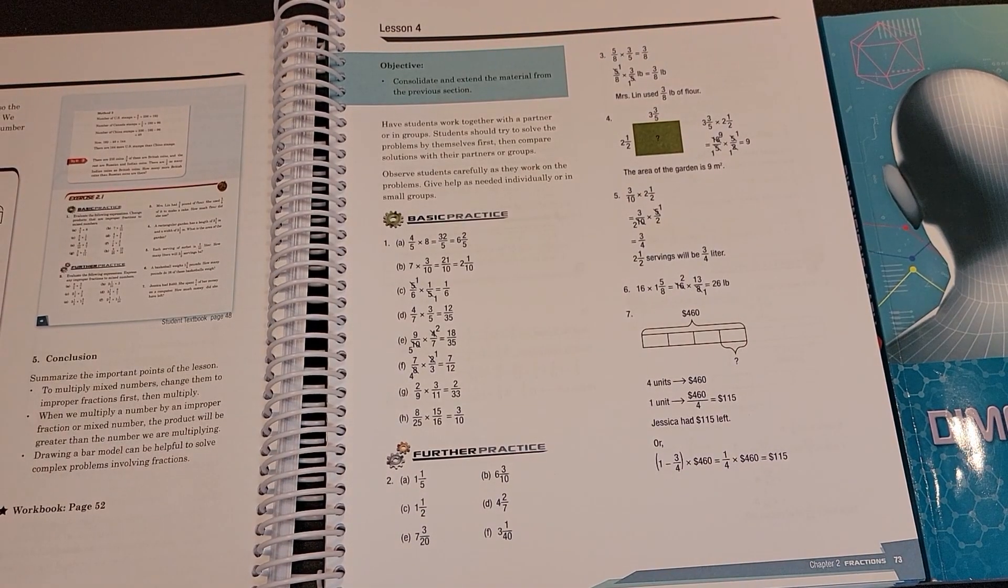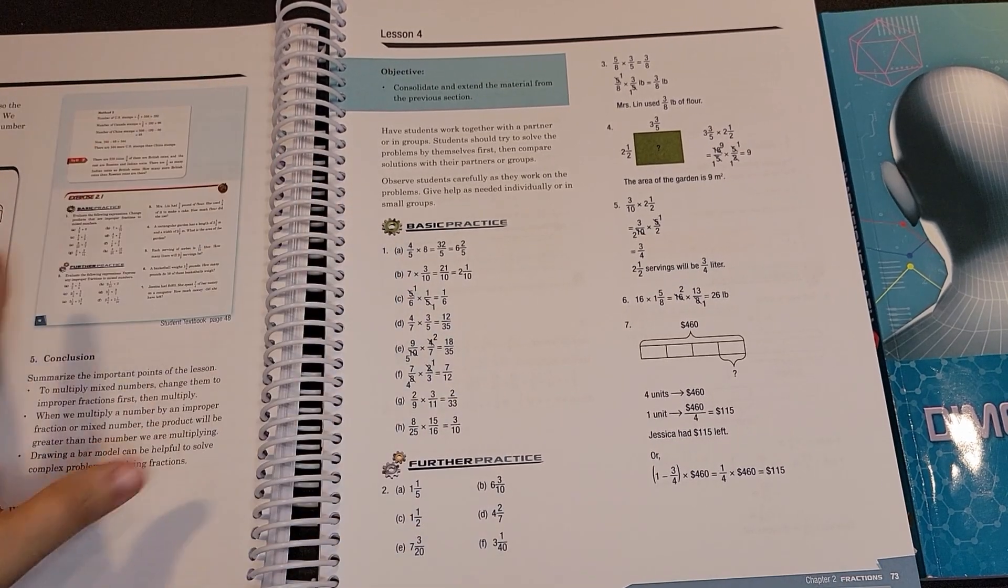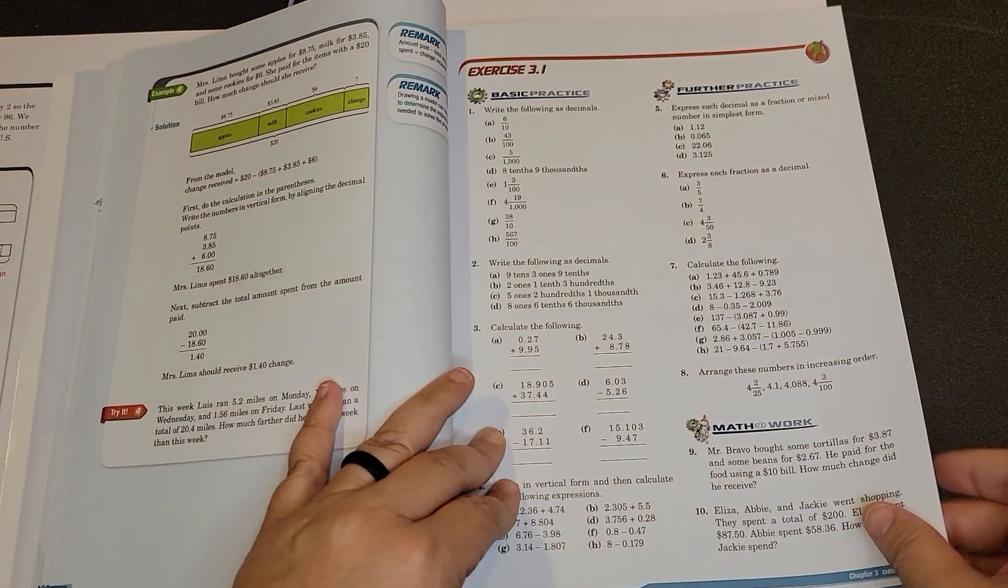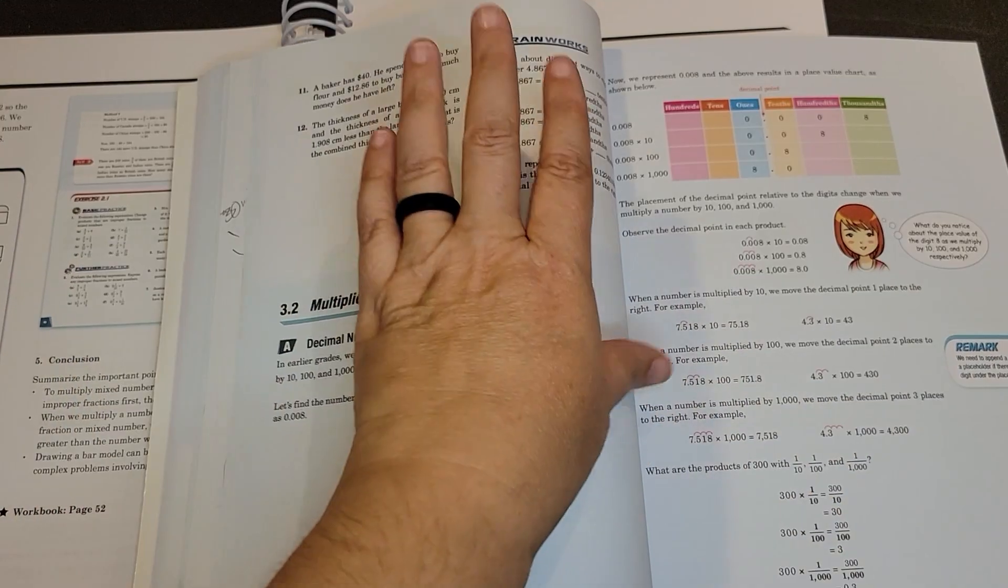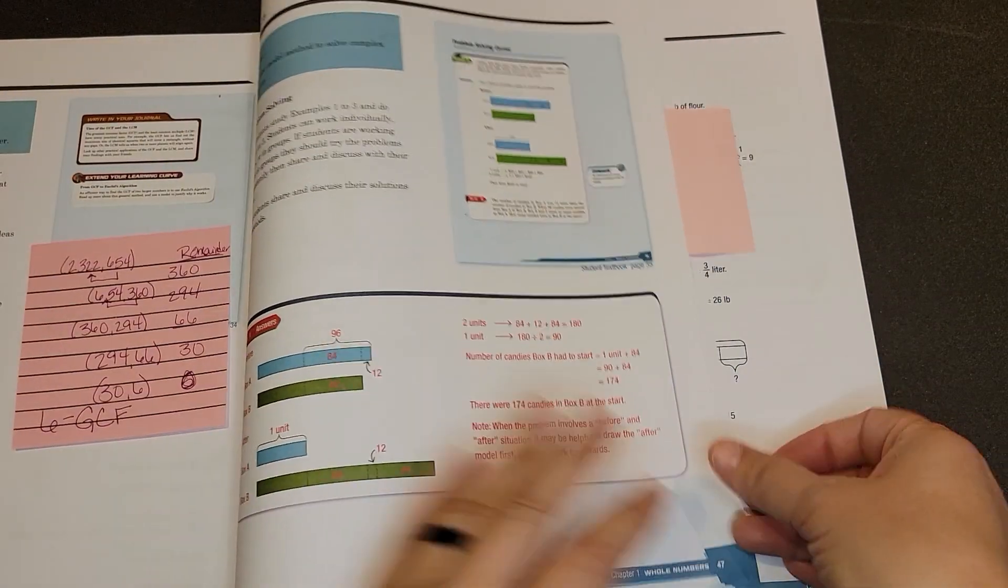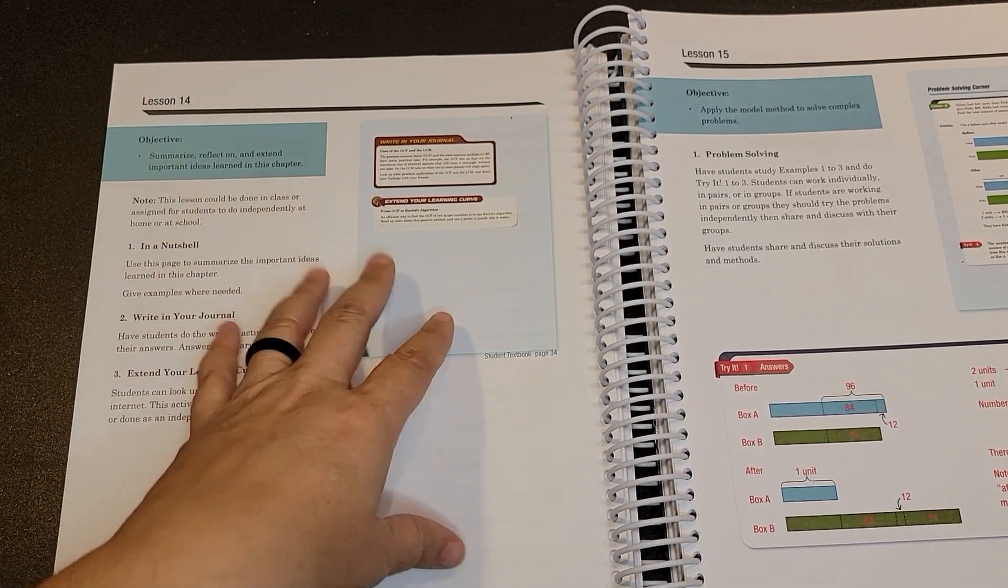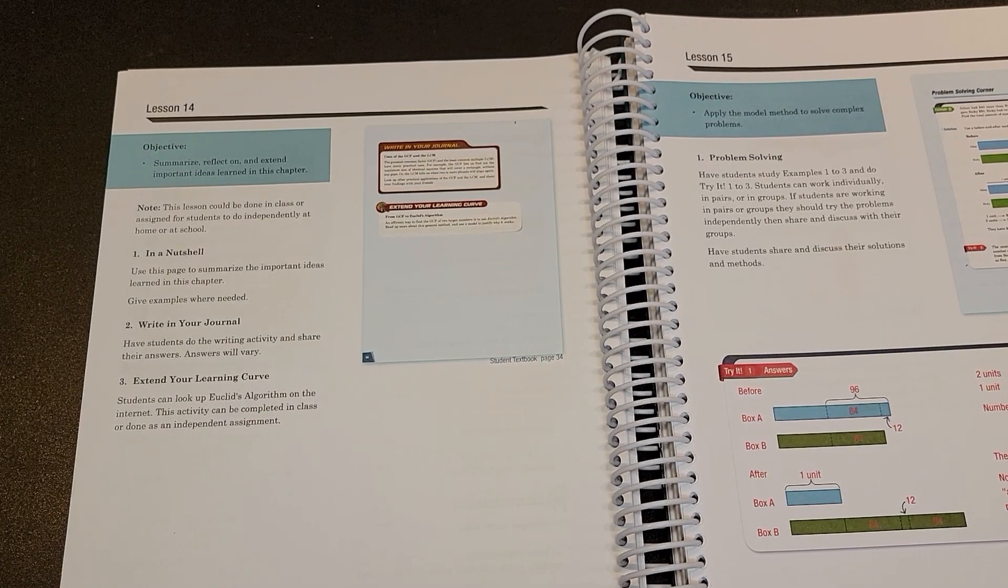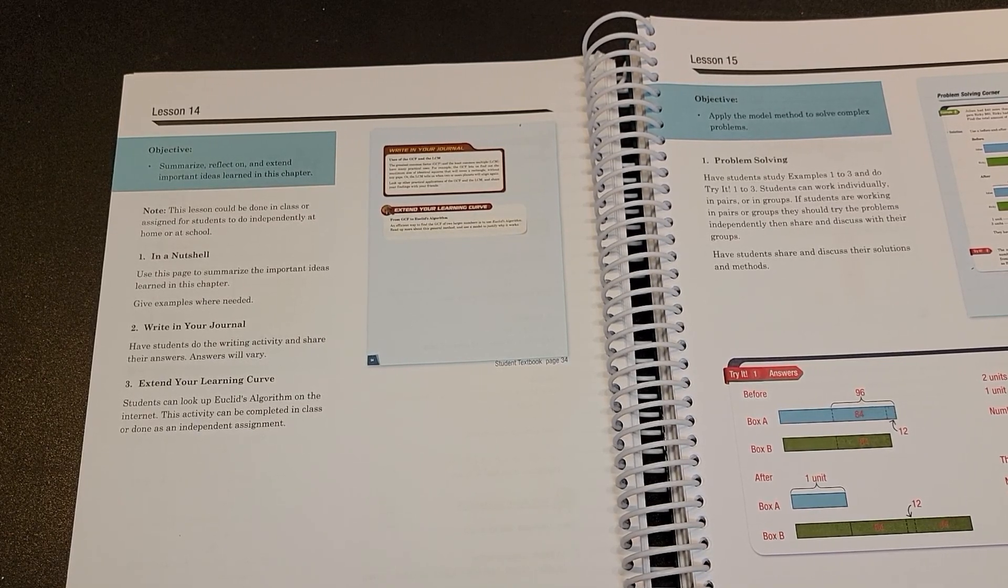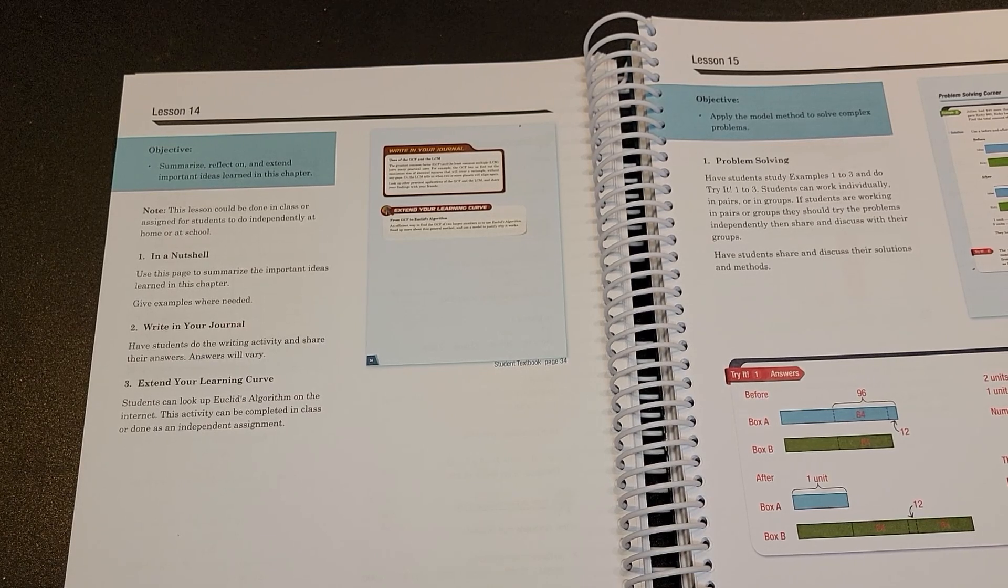Now something else that is different with Dimensions six and that I actually really like is where they have extended practice. After you've gone through a few lessons you will get this extended practice and the extended practice reviews the material that you've had, math at work, but then they have your brain work. These are very helpful in knowing if your student understands and comprehends the concepts. Additionally they will have these objectives to summarize and reflect on important ideas. So for example one day we just focus on Euclid's algorithm and how do we use greatest common factors and least common multiples in real life. And so I did like that we now have a journal that we are using for math to show how these have practical applications for your life.